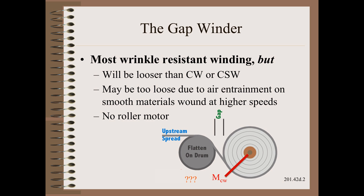The purpose of a gap winder was covered in great detail in Web101. In short, it is to provide the most wrinkle-resistant winding mode by using several tricks and tools. Of course, we have to give up the tightening benefits of a nip and may quite possibly be speed limited on wide smooth products such as most film grades.